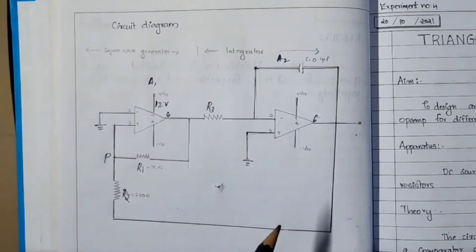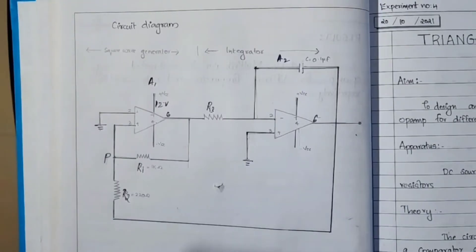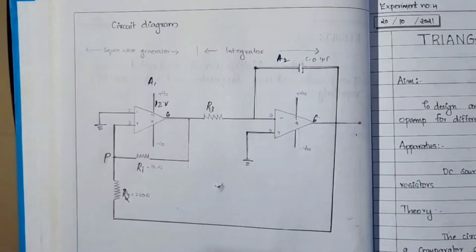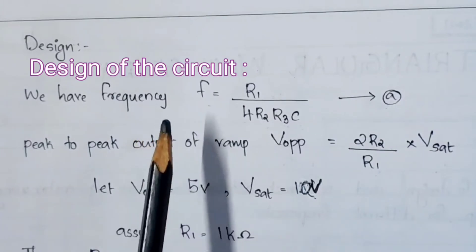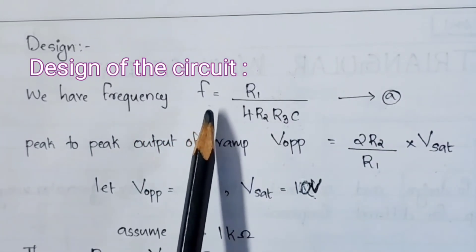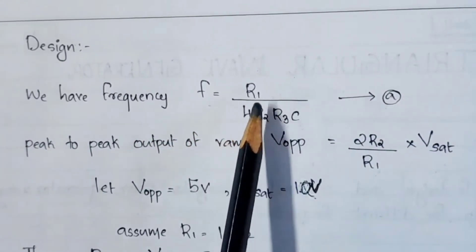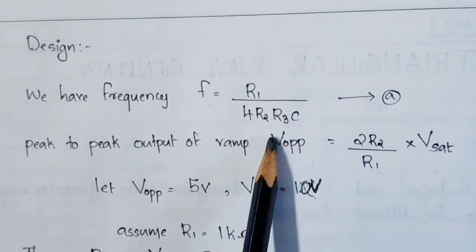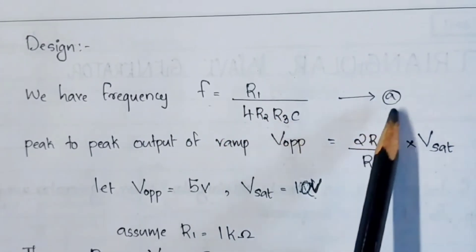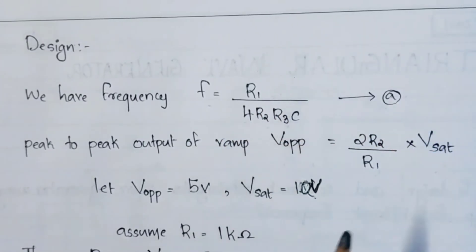We have to design the circuit before making the connections. The expression for frequency of the triangular wave is: F = R1 / (4 × R2 × R3 × C). Let us designate this as expression A. Then the peak-to-peak output voltage of the ramp, VOPP, is given by another expression.